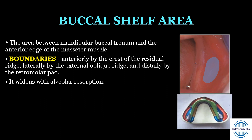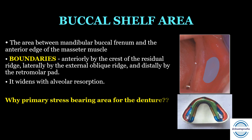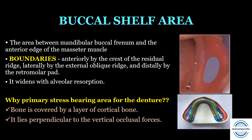Why is it considered the primary stress-bearing area? First, the bone is covered by a layer of cortical bone. Second, it lies perpendicular to the vertical occlusal forces. This is again a very frequent question asked by the examiner.